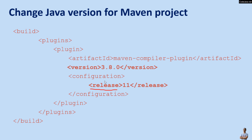You can also specify the same version number for both source and target using the release tag. Note that for this to work you need to specify the version of the Maven compiler plugin greater than 3.6 — here it is 3.8.0.